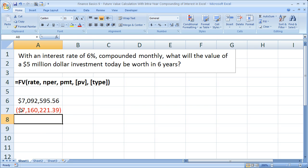$7,160,000. I'll put the negative sign in front of it. We get a little bit more—about $70,000 more if our interest is compounded monthly versus yearly. You can see it makes a significant difference when dealing with larger sums of money over longer periods of time.